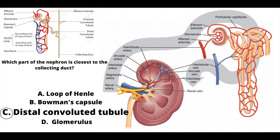It might seem that everything is in close proximity because everything is kind of squished up. But if you follow the flow of blood in the renal system, then you'll know that the distal convoluted tubule is the closest to the collecting duct. On the right-hand side I have an image — triple, quadruple checked — of the correct pathway of blood flow through the kidneys. The pathway starts at the renal artery and ends at the interlobal vein, and the collecting duct and distal convoluted tubule are shown at the top left.